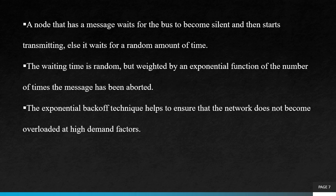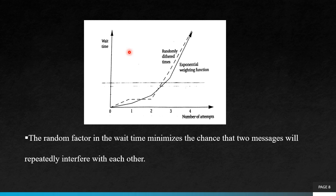The exponential backoff technique helps to ensure that the network does not become overloaded at high demand factors. The figure shows the exponential backoff function both before and after it is modulated by the random wait time. The solid line indicates the exponential weighting function and the other line indicates the randomly deferred times — i.e., once the random factor is modulated with the exponential weighting function. The random factor is added to ensure that no two messages will be repeatedly interfered with each other, and since the random factor is new each time, the chance for interference of the same message every time is reduced.